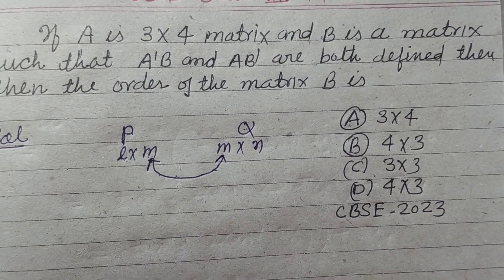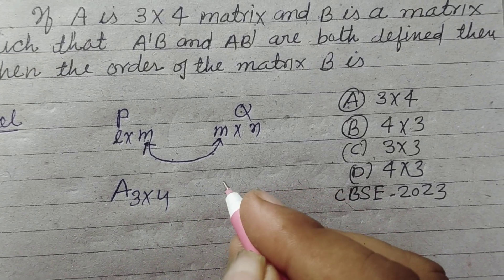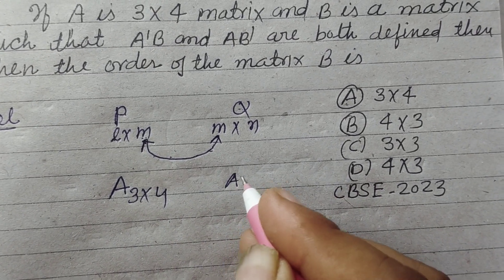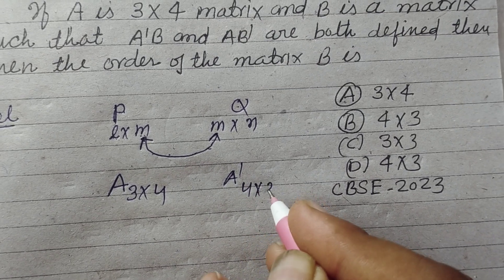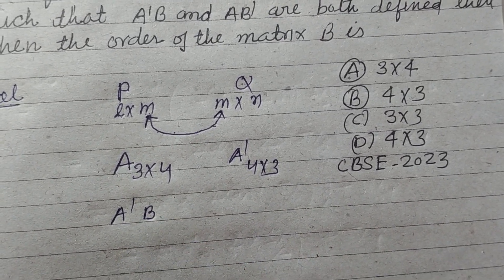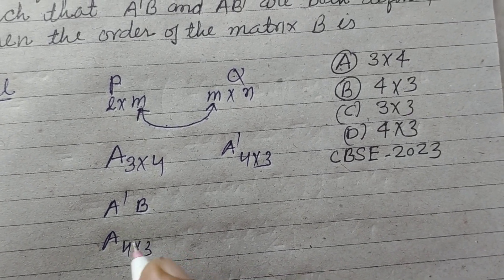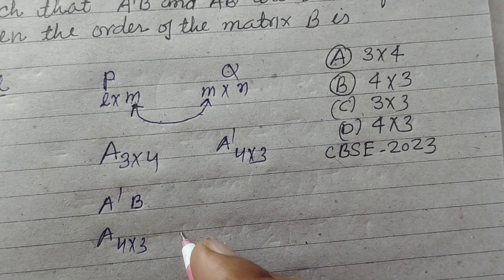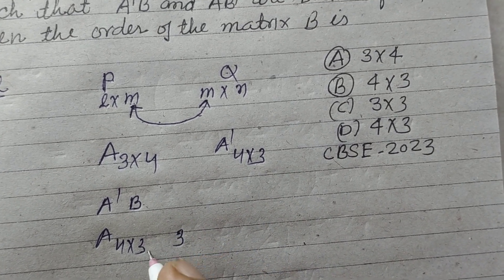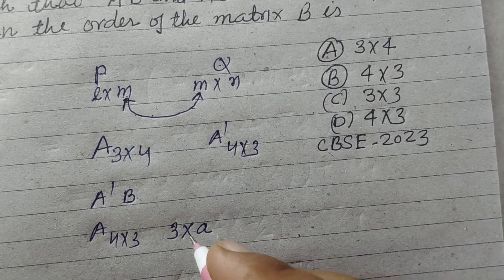So similarly here, A is given 3 by 4, then A' is 4 by 3. Here it is given that A'B is defined. It means A' is 4 by 3, therefore B will be 3 into let it be alpha.